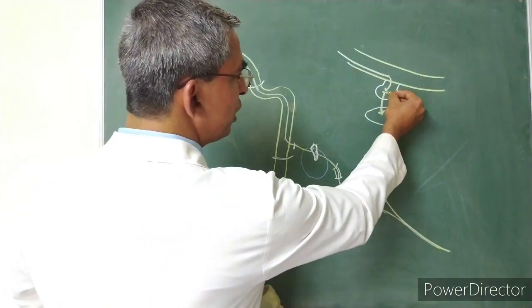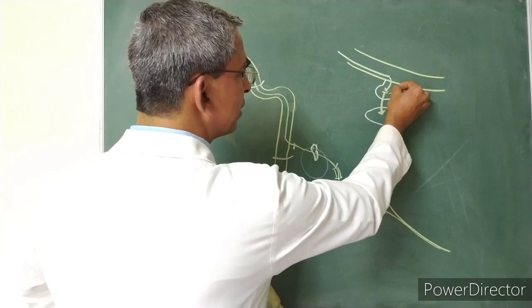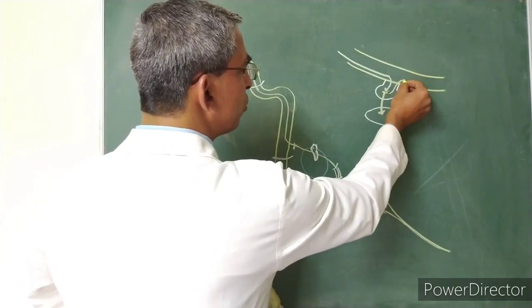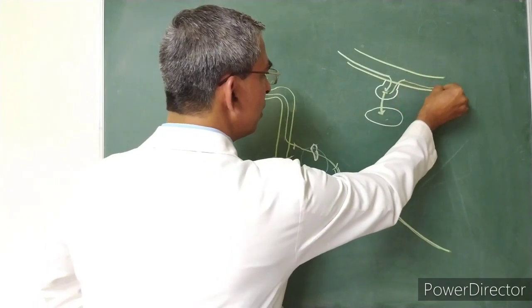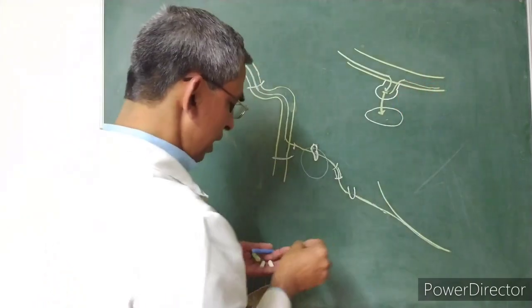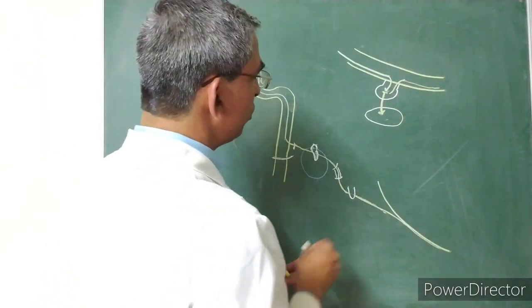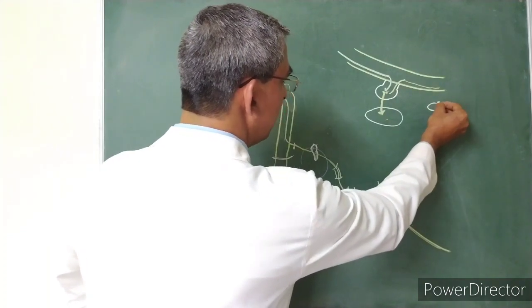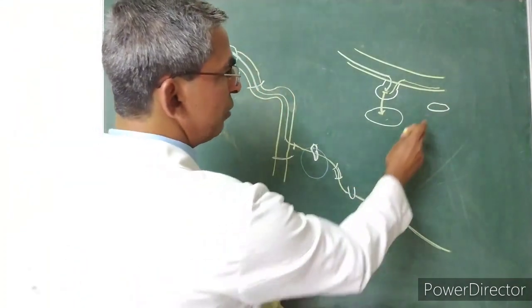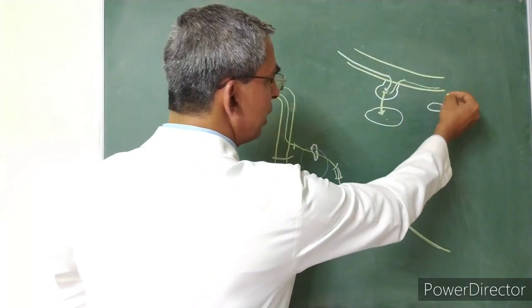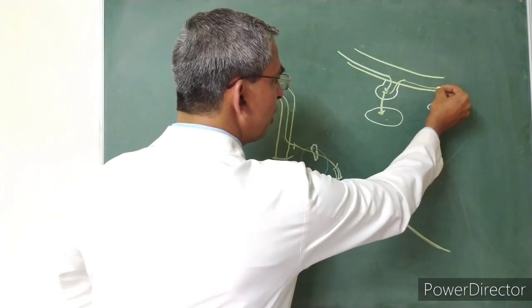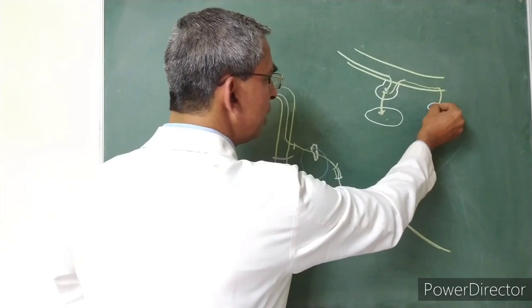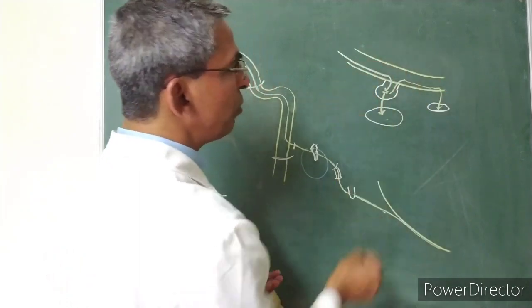The postganglionic fibers from the submandibular ganglion again enter into the lingual nerve and run through it. Anteriorly, the sublingual gland is very close to the lingual nerve. The postganglionic fibers then separate and enter into the sublingual gland, supplying it through the lingual nerve pathway.